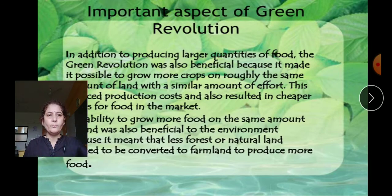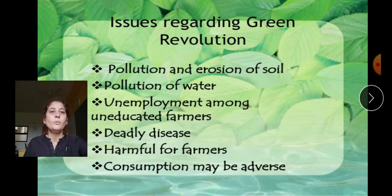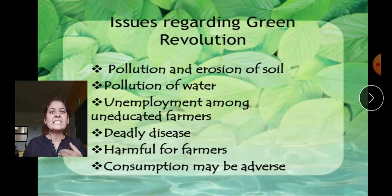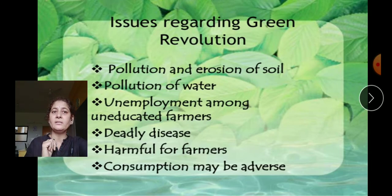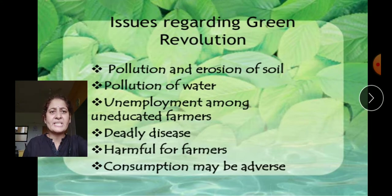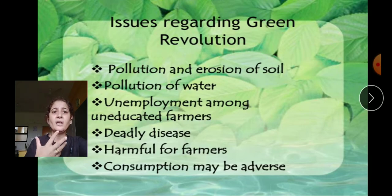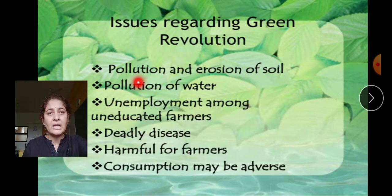Now, after 30 to 50 years, we feel certain issues and problems. There is soil pollution, erosion of soil, and water pollution because we use so many ureas, chemicals, and pesticides as part of the Green Revolution. Also, unemployment arose because machines replaced many uneducated farmers.